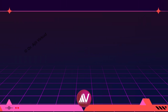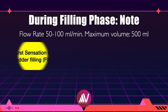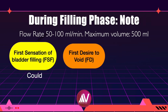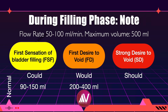Some normal values assessed during the filling phase: maintain the flow rate at 50 to 100 ml per minute and the maximum filling volume should not be greater than 500 ml. The first sensation of bladder filling is normally at 90 to 150 ml. The first desire to void should occur between 200 to 400 ml, and the normal value for strong desire to void is 400 to 600 ml.